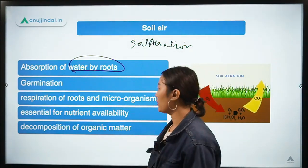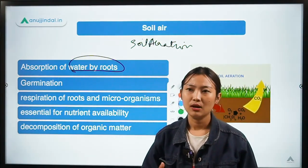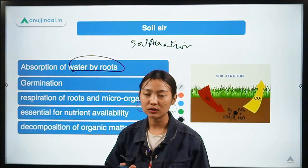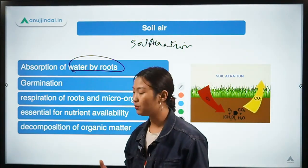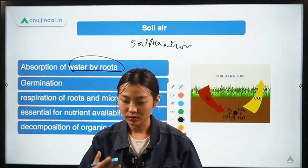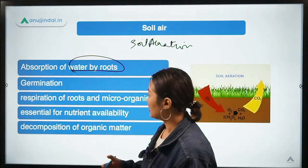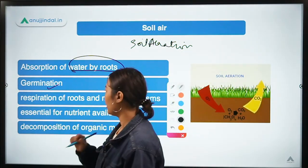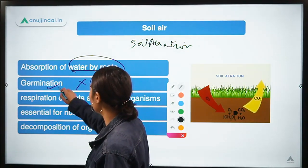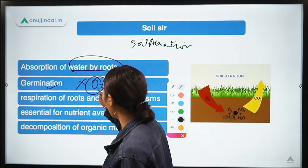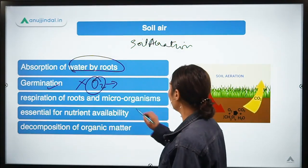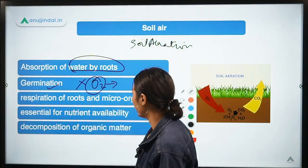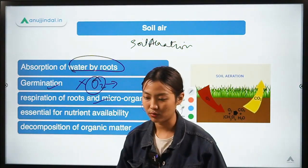These biological processes cannot occur without the presence of air or oxygen. Germination is also inhibited if oxygen is not there — germination is inhibited without oxygen. If oxygen is present, germination can begin. Another point is that soil air is essential for the respiration of roots as well as for microorganisms.